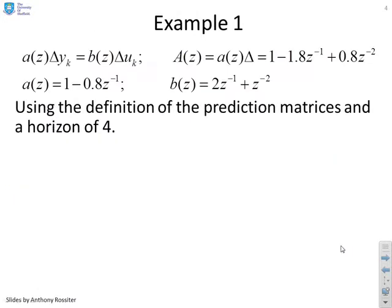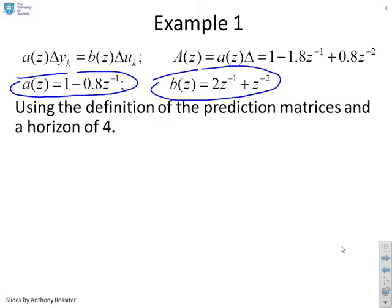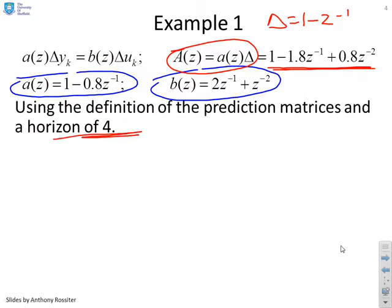First example. We're going to take an A here, 1 minus 0.8 Z inverse, and a B given as 2Z inverse plus Z minus 2. Very simple system so that you can see the numbers and what's going on. If you calculate capital A, which is given as A delta, and you may remember delta is 1 minus Z inverse. If you multiply that out, this is capital A, 1 minus 1.8 Z inverse plus 0.8 Z minus 2. I'm going to take a horizon of 4 to keep things simple.